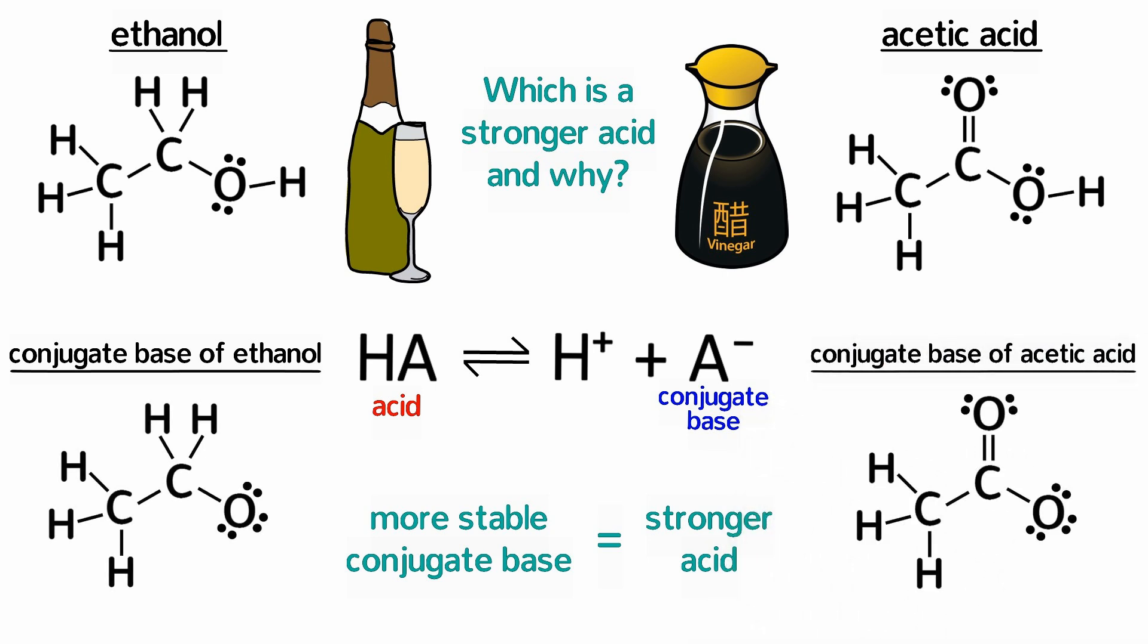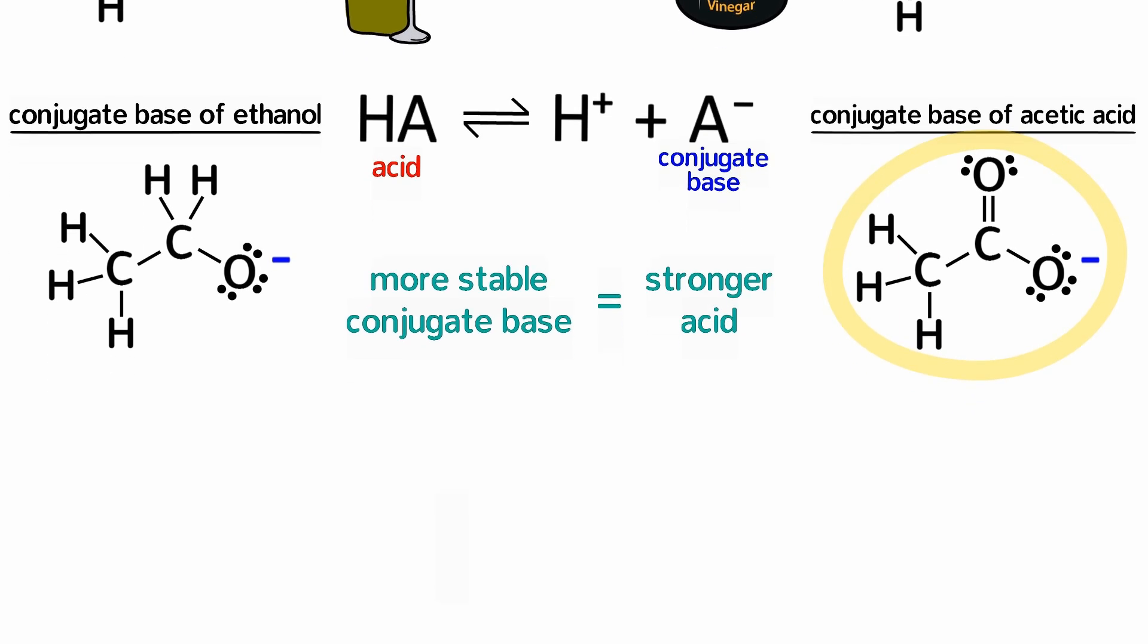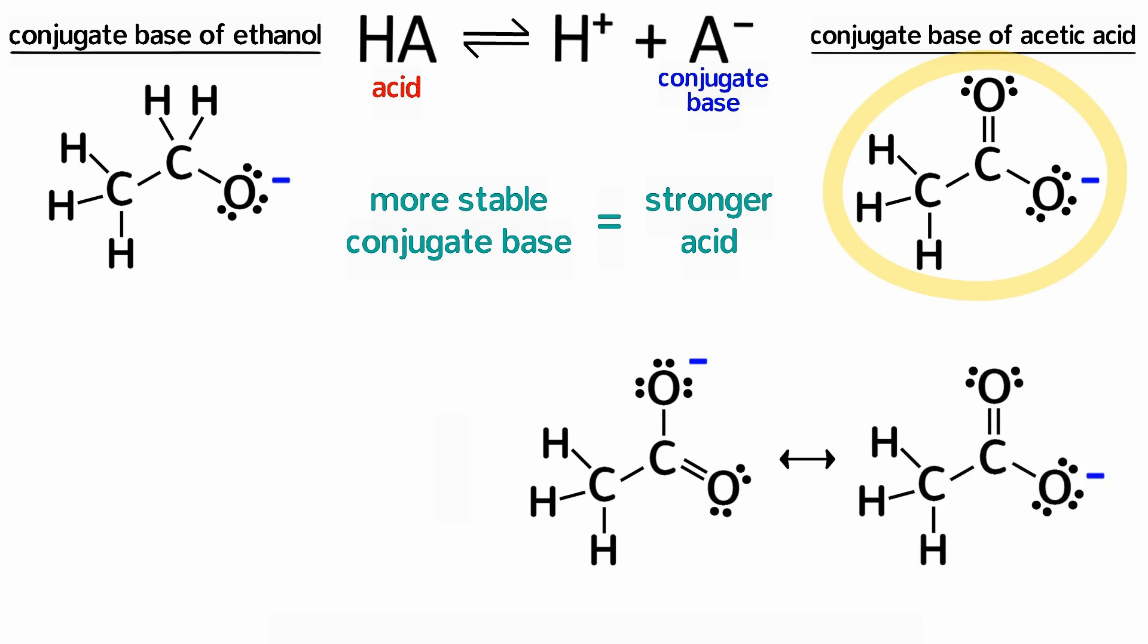Please pause the video and draw any other good resonance structures these conjugate bases have. Also, determine the formal charges for all of the atoms and label the non-zero formal charges. In both cases, the negative charge is on the oxygen. However, only acetate has any good resonance structures. The double bond of acetate can be on either oxygen, making these two equal resonance structures.